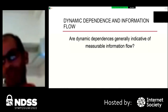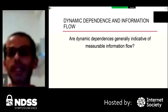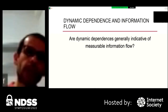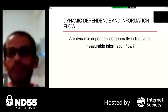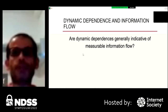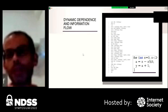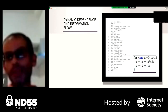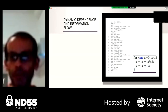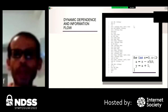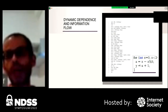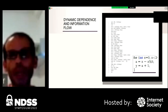Now the question is: are dynamic dependencies generally indicative of measurable information flow? I have dependency — does it mean I have measurable information flow? To answer this, I used two small C code examples. I have a for loop with two lines: one using a modulus operation. Then I show another example replacing the modulus with multiplication. The corresponding assembly for the for loop focuses on instructions that update the value of x, the value of a, and the value of y — labeled instruction 1, instruction 2, and instruction 3.